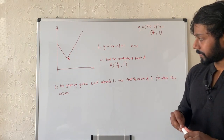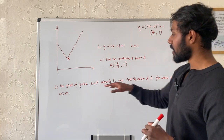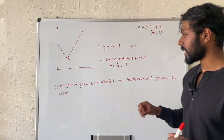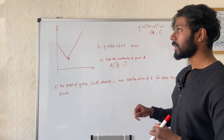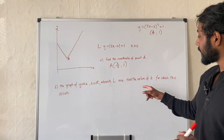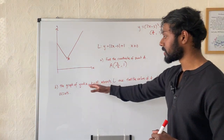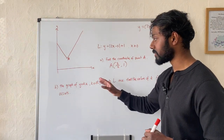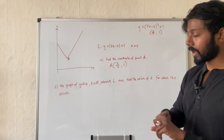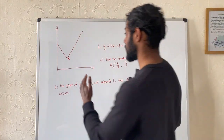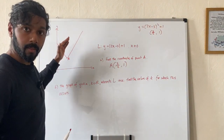The next part says the graph of y equals kx, where k is any real value, intersects the curve once. So we've got this line y equals kx, where k is any real value. A way to think about that is we've got this line that goes through the origin.